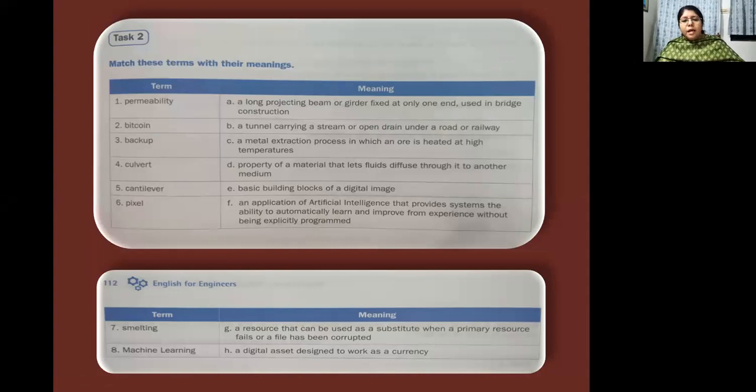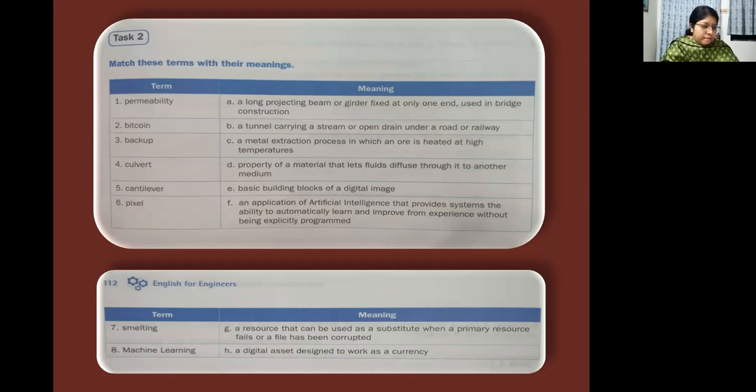So the first one is permeability. So what is the meaning of the term permeability? Permeability means, so which term goes with that? So it is D, property of a material that lets fluids diffuse through it to another medium. So one matches with D. Next, you have Bitcoin. Bitcoin, what is the meaning of that word? So that you have the last one, H, a digital asset designed to work as a currency.